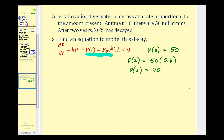Now we should be able to find k using p of zero equals 50 and p of two equals 40 with our exponential function. If p of zero equals 50, then p sub zero is 50. If p of two equals 40, we substitute two for t and 40 for p of t. So we have the equation 40 equals 50 times e raised to the power of 2k. This tells us we're starting with 50 milligrams, and after two years we have 40 milligrams. Now that we have one unknown, we can solve for k.